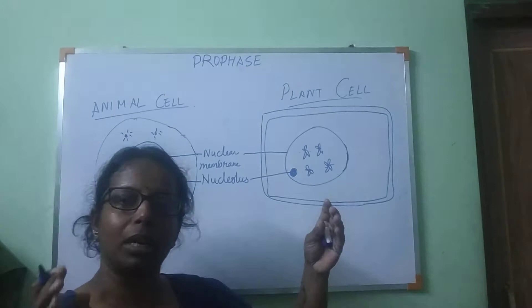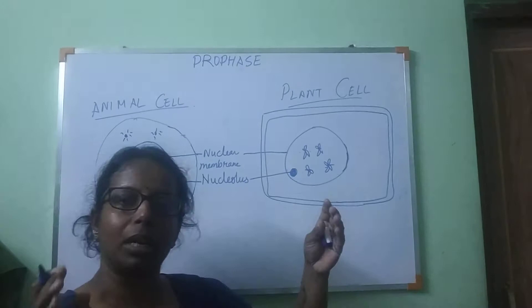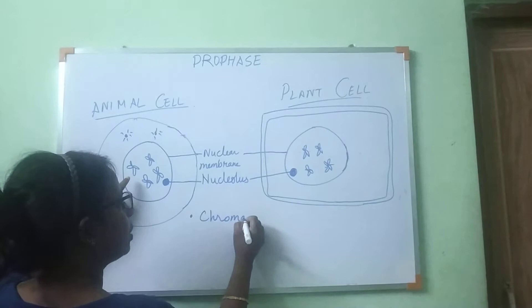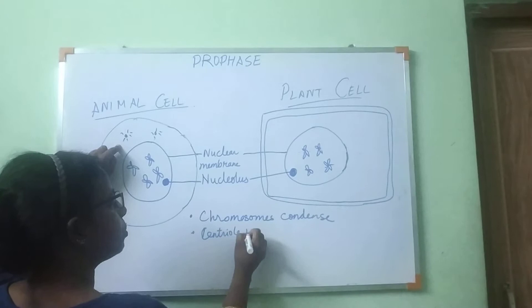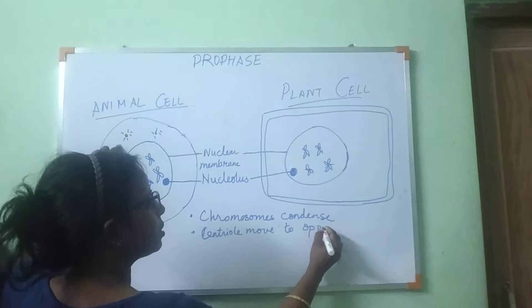In prophase, the thin chromatin fibers become condensed. First point: chromosomes condense. Second, centrioles move to opposite poles — they start moving towards the opposite poles like this.